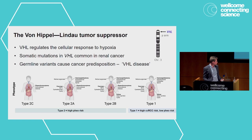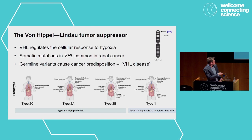Why VHL is a great model for studying variant effects across a complex landscape is that there are different types of VHL disease. Type 1 disease is marked by a high kidney cancer risk and very low pheochromocytoma risk, whereas the different flavors of type 2 disease are all marked by a very high pheo risk. In type 2b there's also a high risk of clear cell RCC; type 2a, hemangioblastoma but no CCRCC; and type 2c, pheochromocytoma.